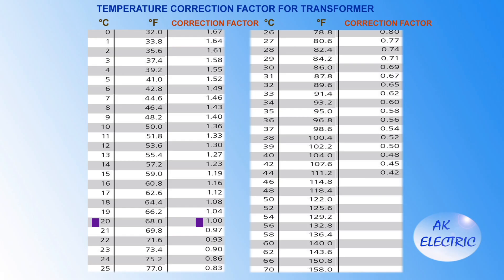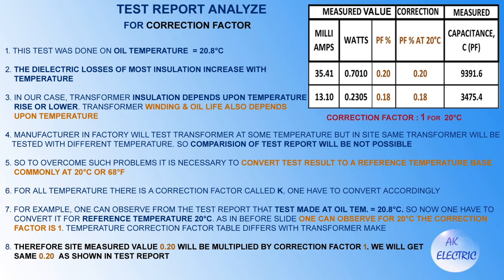The manufacturer in the factory will test the transformer at some temperature, but in the field the same transformer will be tested at a different temperature, making test report comparison difficult. To overcome this problem, it is necessary to convert test results to a reference temperature base, commonly 20 degrees Celsius or 68 degrees Fahrenheit. A transformer correction factor table is used for that purpose, and this table will differ according to transformer make, cold countries, and warm countries.